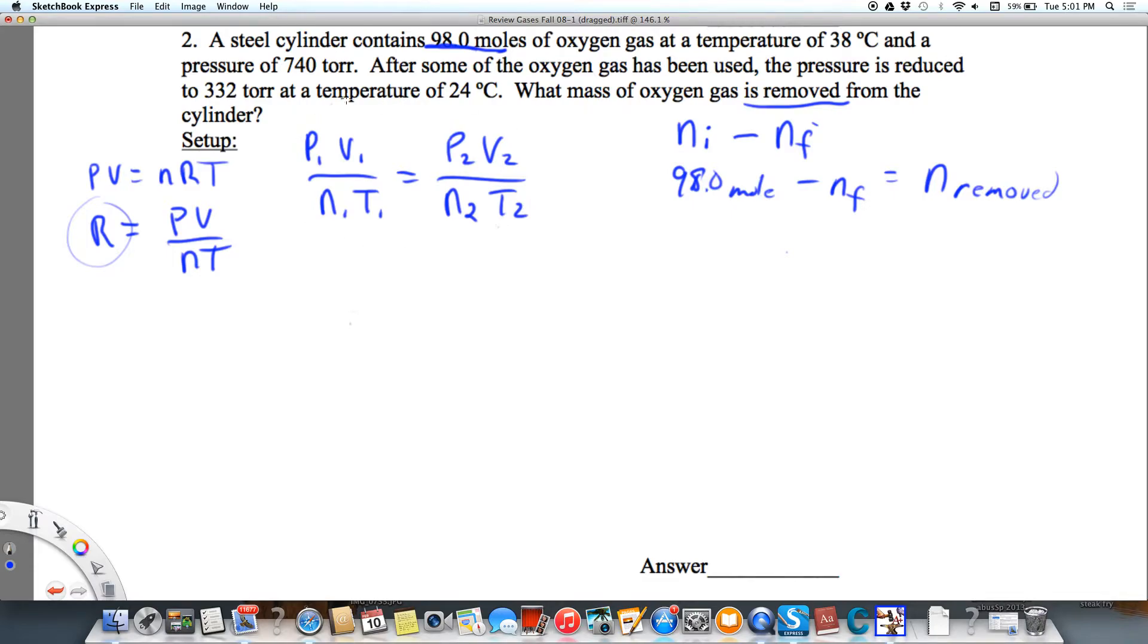So I want to solve this equation for n2. You need to be able to do this algebra in your head. But n2 is going to equal P2V2n1T1 over T2P1V1. That looks complicated, but it all started with PV equals nRT.